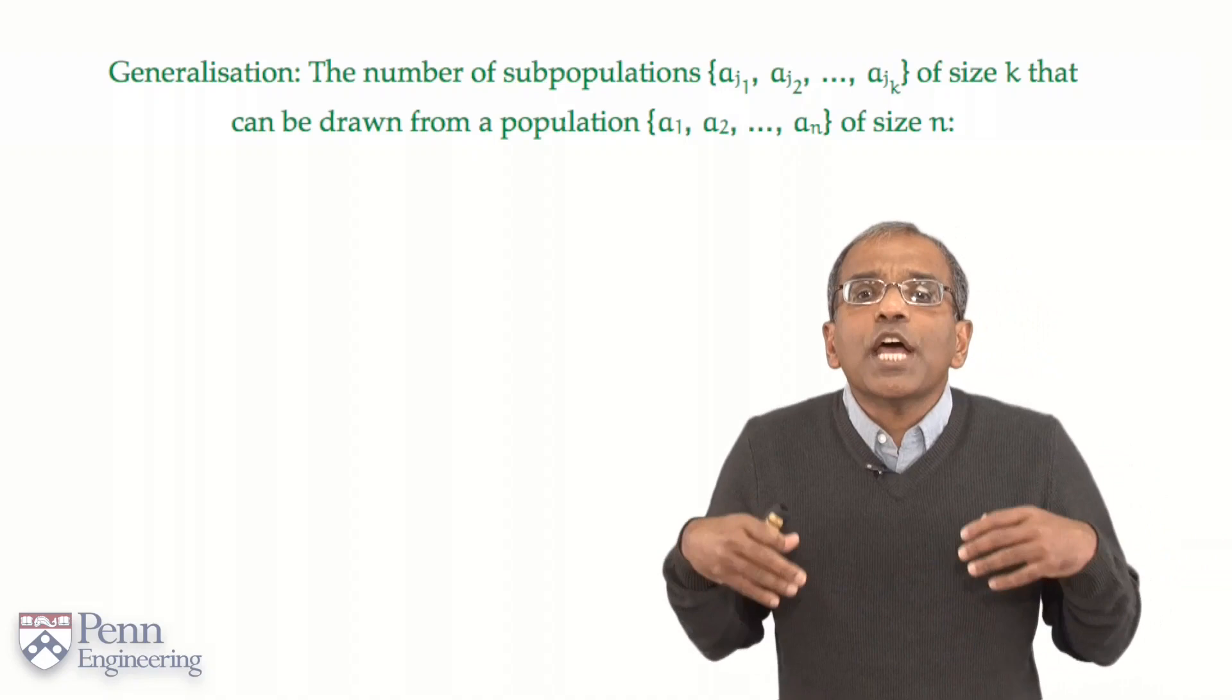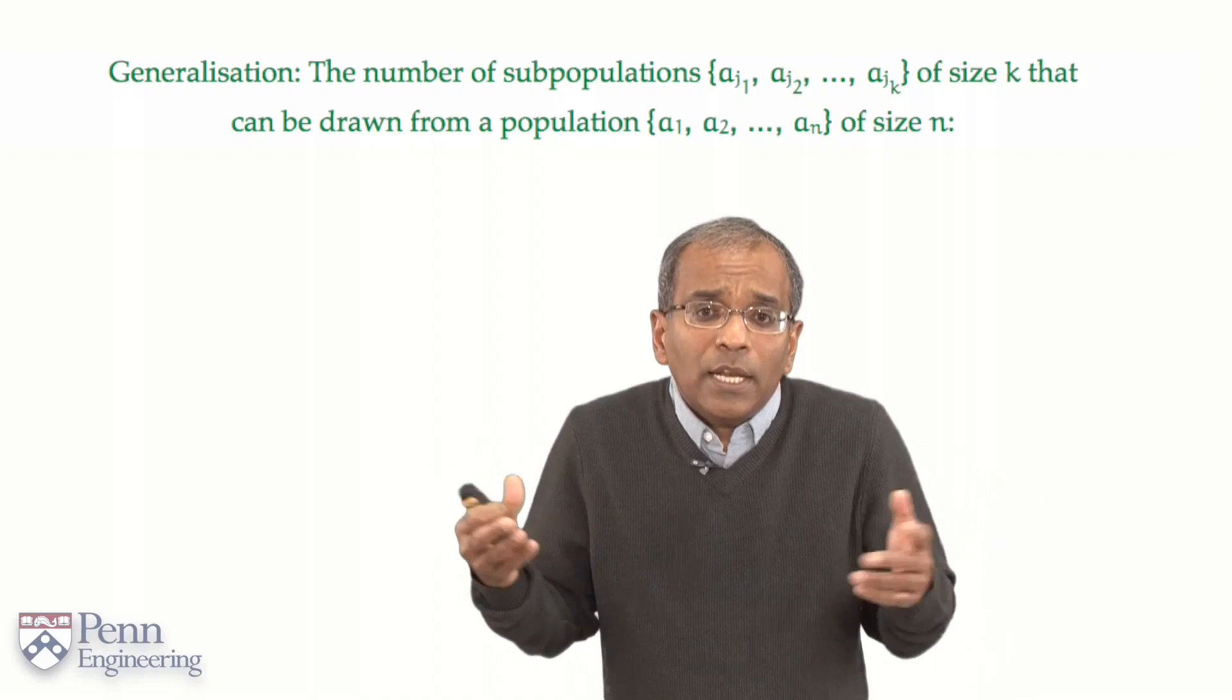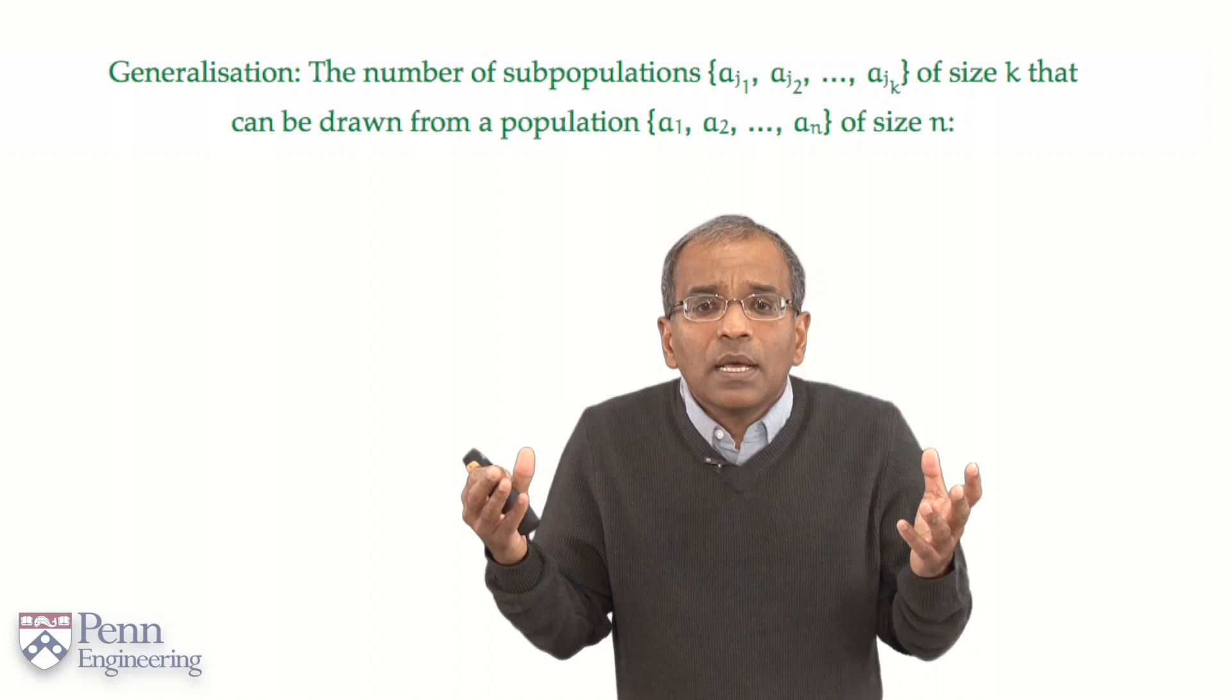So, let's go back now to a general, generic population of n elements. Again, let's say a1 through an, though what these objects are are not germane.